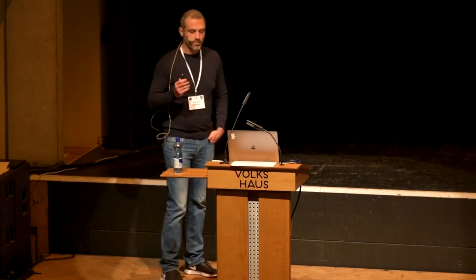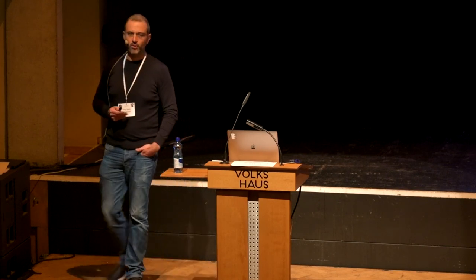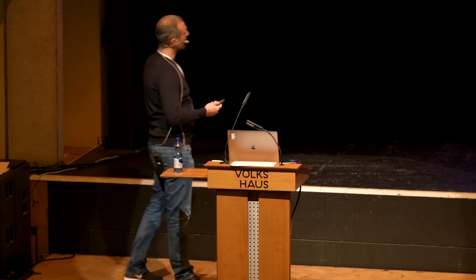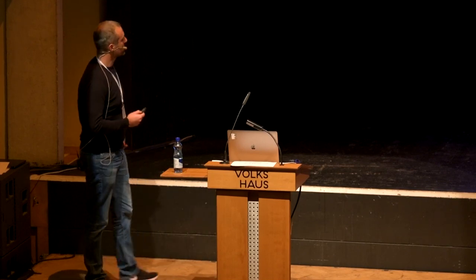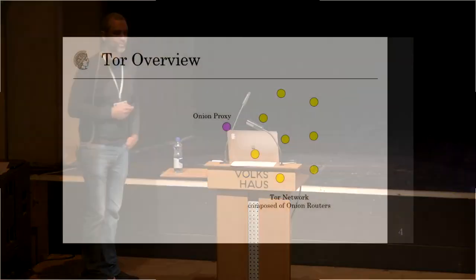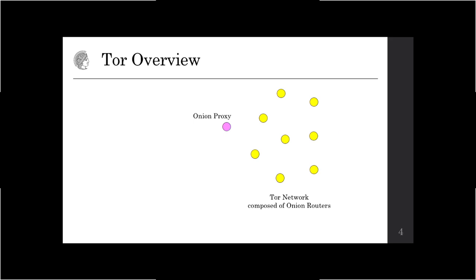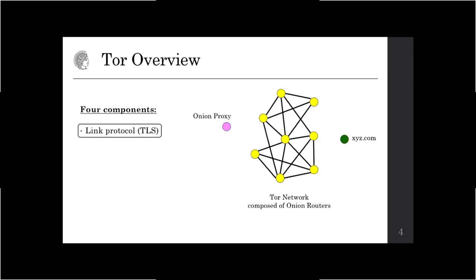Tor is a tool for maintaining anonymity online. The way it works is that there is a Tor network composed of several nodes called onion routers. The user who wants to use Tor will run a piece of software called an onion proxy. Let's say this user wants to connect to xyz.com — the following sequence of events will occur, invoking four different sub-protocols, the main four components of Tor. The first one is the link protocol, which is essentially TLS, used to secure point-to-point communication between the several onion routers.